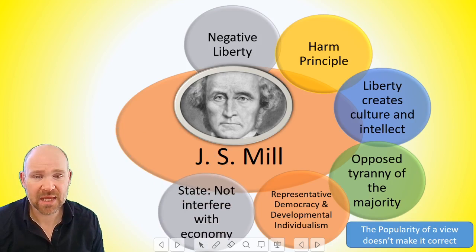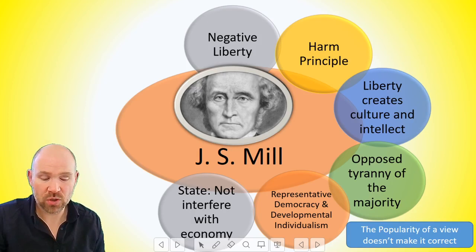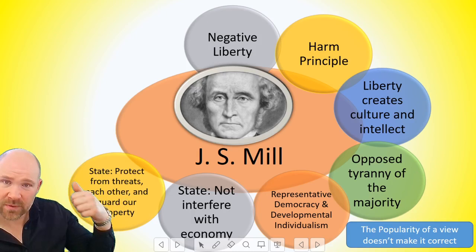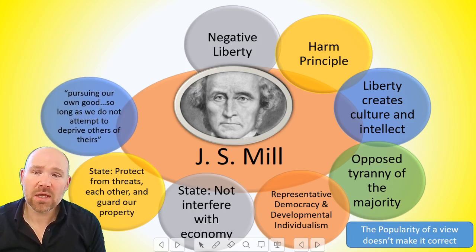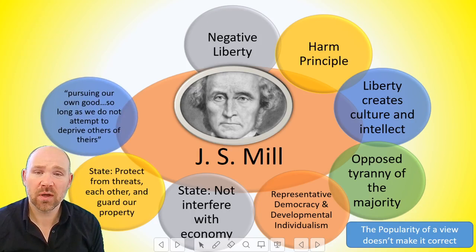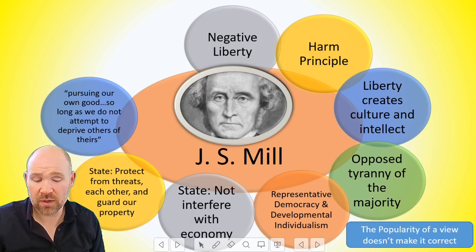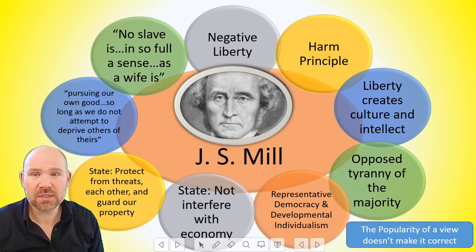Egotistical individualism, seen under Locke and classical liberalism, is the idea that everyone can make decisions based on what will benefit themselves. Developmental individualism is the idea that we should live in a society where everyone is able to make decisions that benefit themselves and we should support each other in doing so. Still under Mill, the state should not interfere with the economy — laissez-faire economics, hands off, don't be redistributing wealth, don't be interfering with companies and businesses. The state is only there to protect us from each other and guard our property. He argues we should be pursuing our own good so long as we don't attempt to deprive others of theirs.